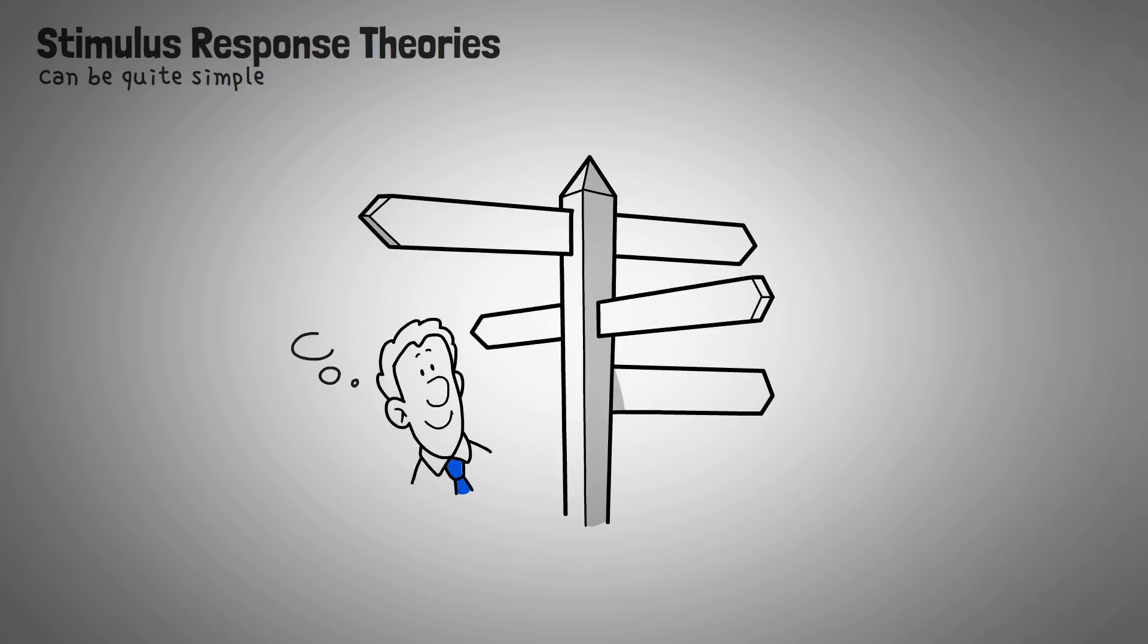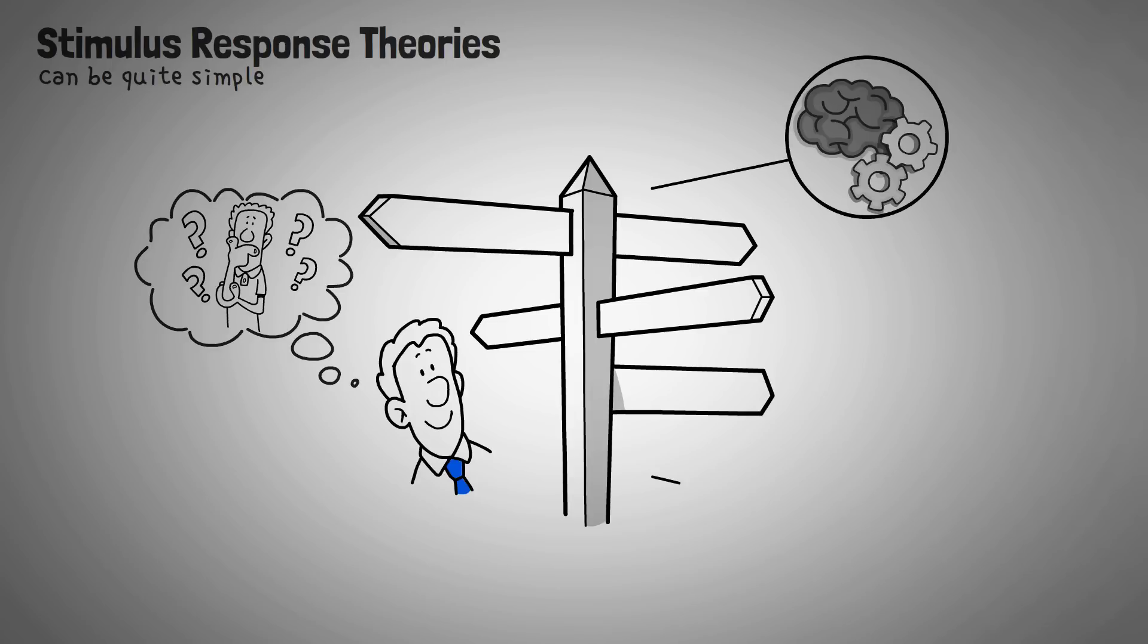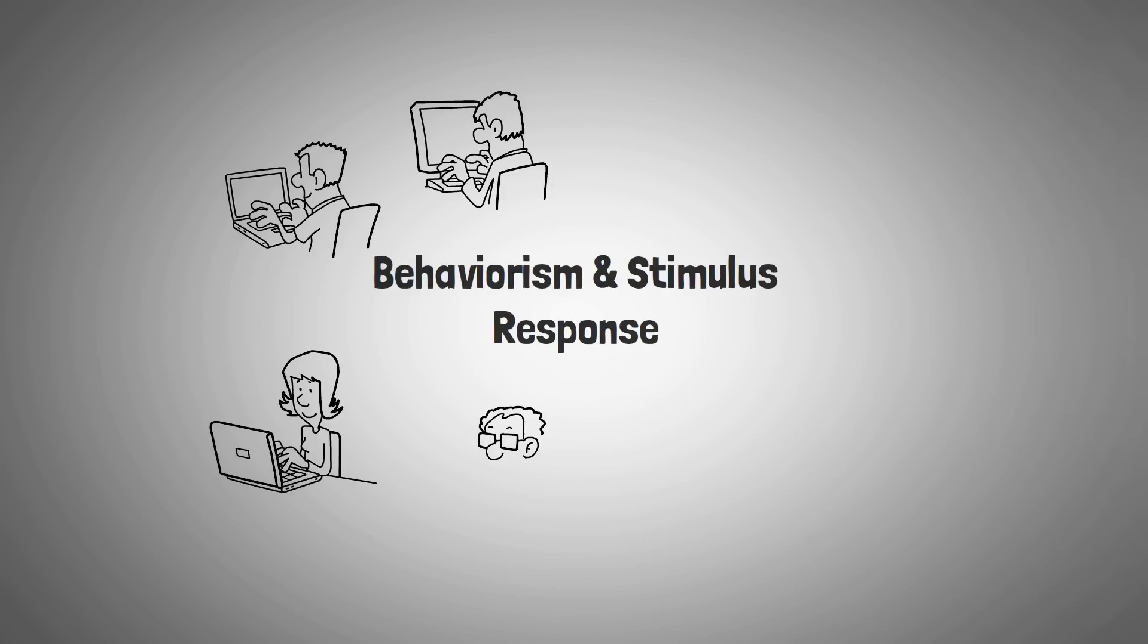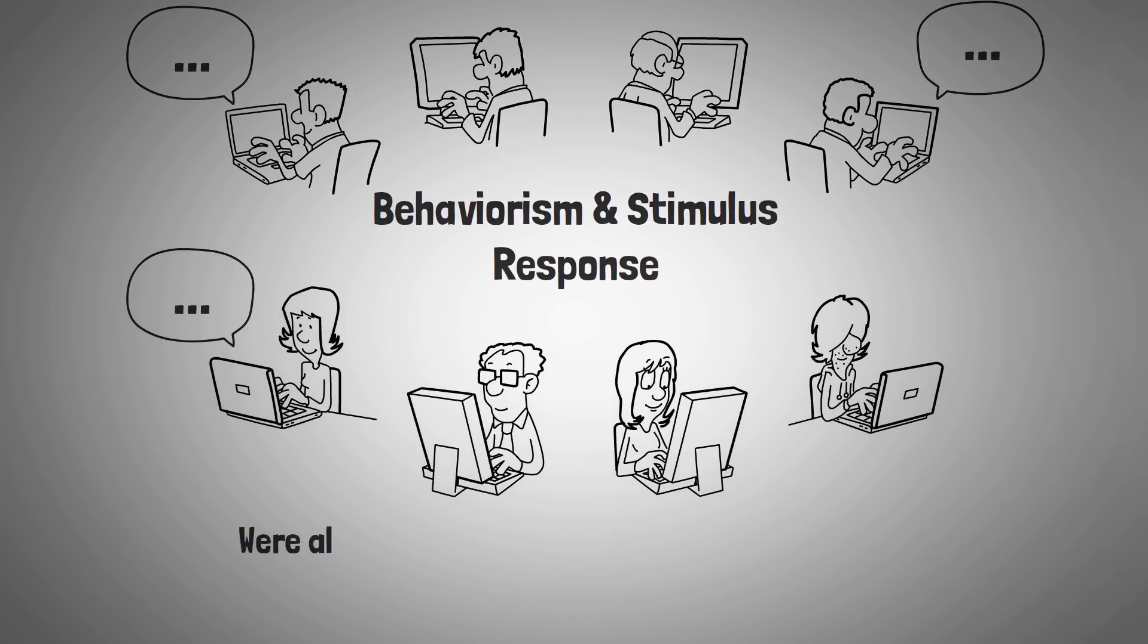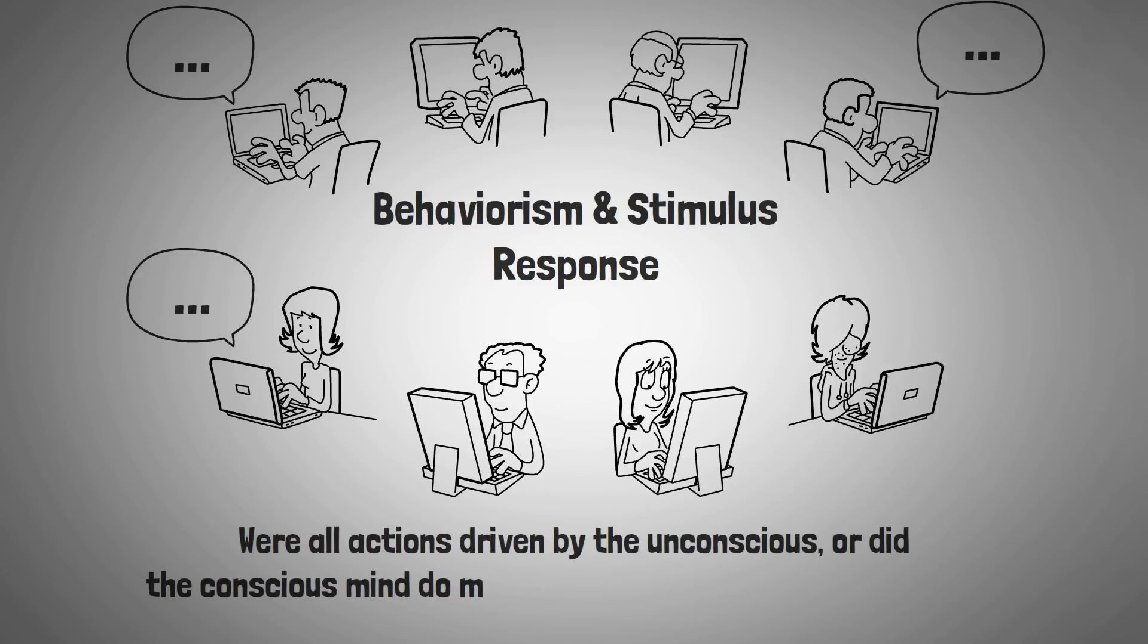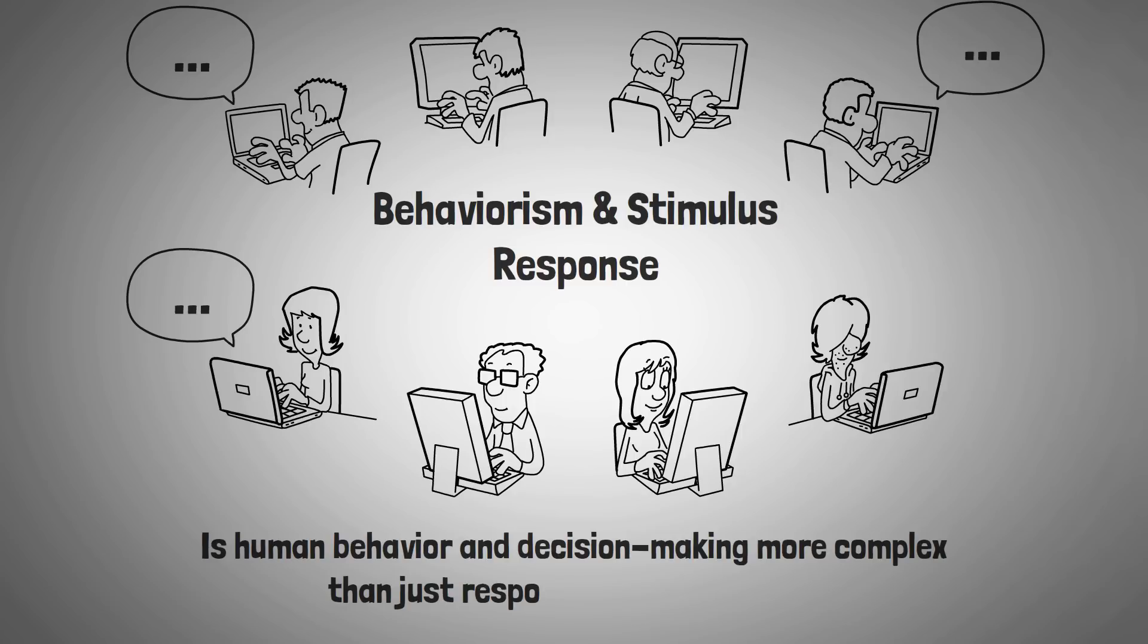Stimulus-response theories, to be blunt, can be quite simple. They are also deterministic in nature. No one wants to believe that their decisions are the result of any sort of conditioning. Additional factors, like your thought process or the experiences that have shaped you as a person, may also influence the decisions you make. Making a decision or performing a behavior often seems more complicated than just responding to the stimulus in front of you. Although behaviorism and stimulus-response theory were the focus of psychology for decades, they were subject to criticism from many experts in the field. Were all actions driven by the unconscious? Or did the conscious mind do more than we were giving it credit for? Is human behavior and decision-making more complex than just responding to a stimulus?